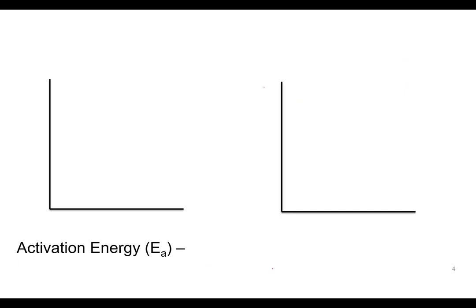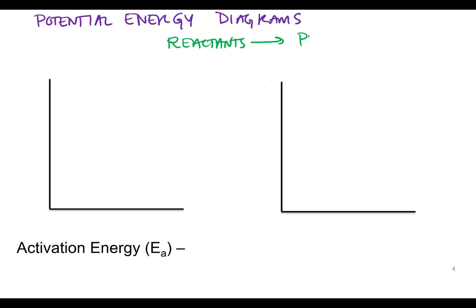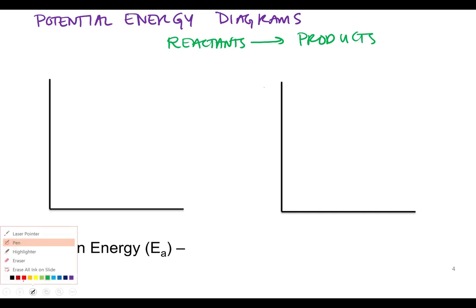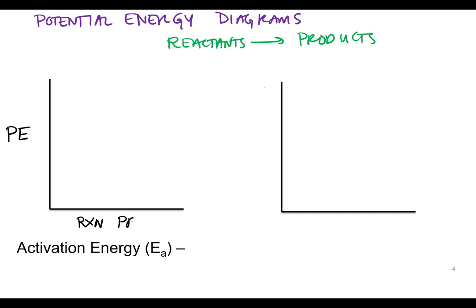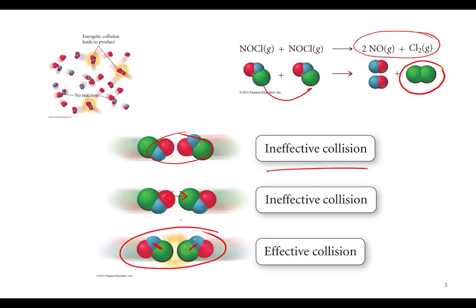Now let's talk about what the activation energy is and why it's there for every reaction. The best way to show this is to look at something called potential energy diagrams of a reaction. These diagrams plot the potential energy of the system as a function of something called the reaction progress — which is how far along the reaction is. Reactions aren't instantaneous; there's a progression to them.